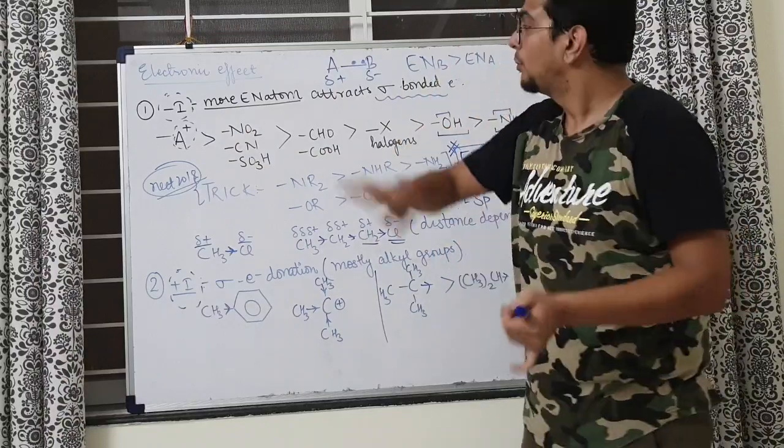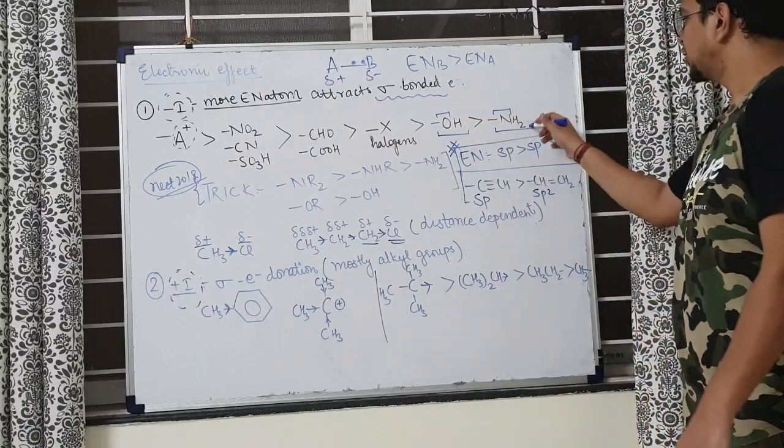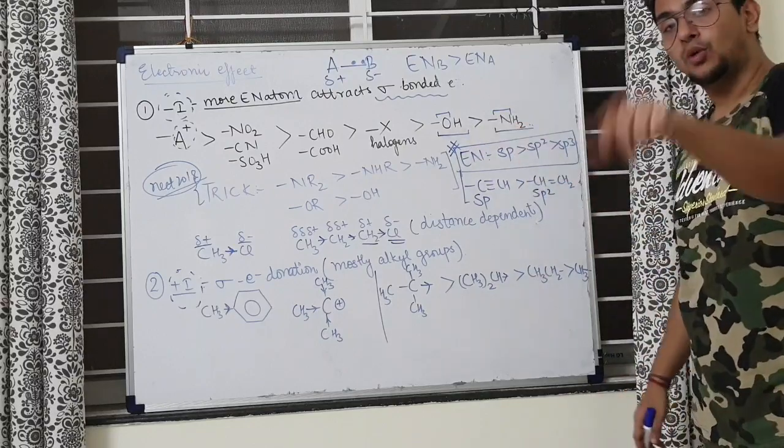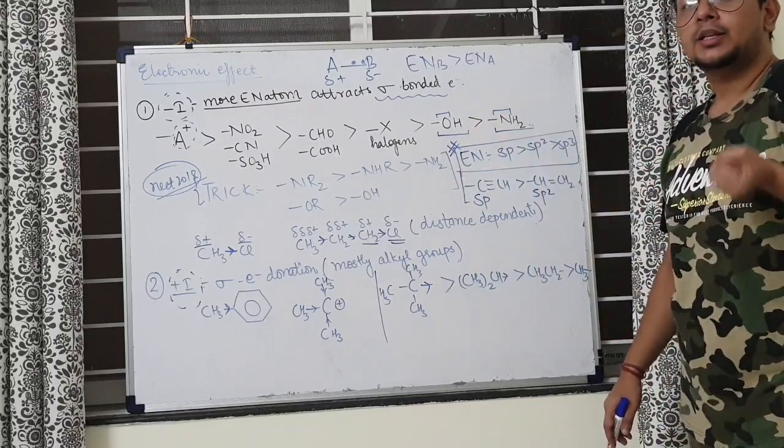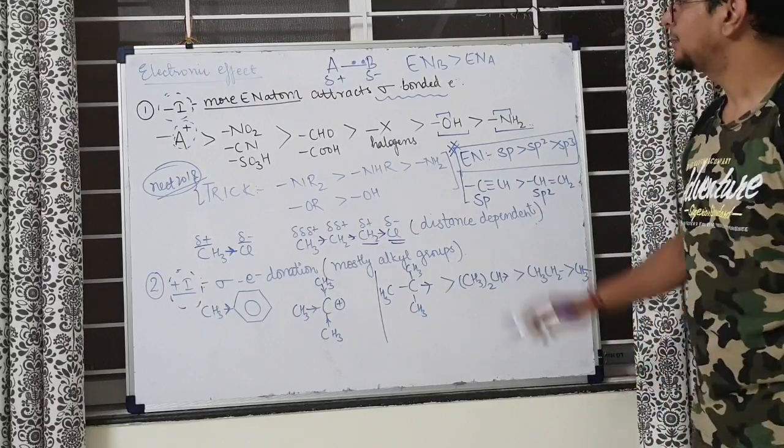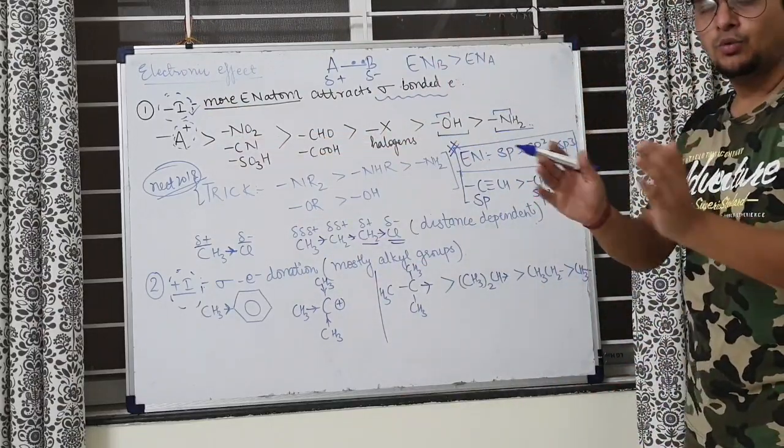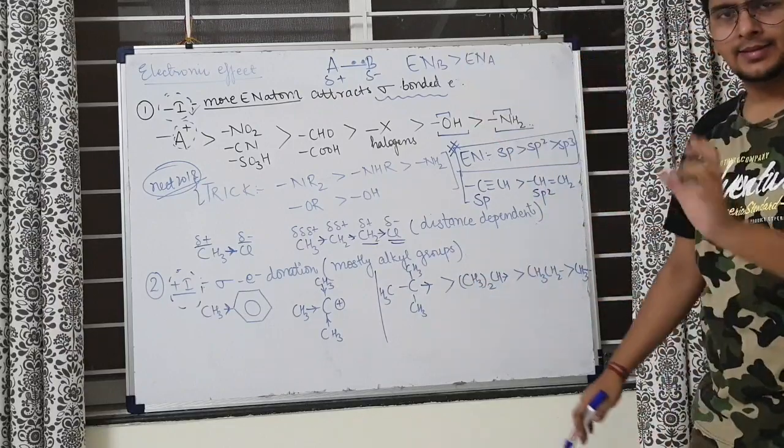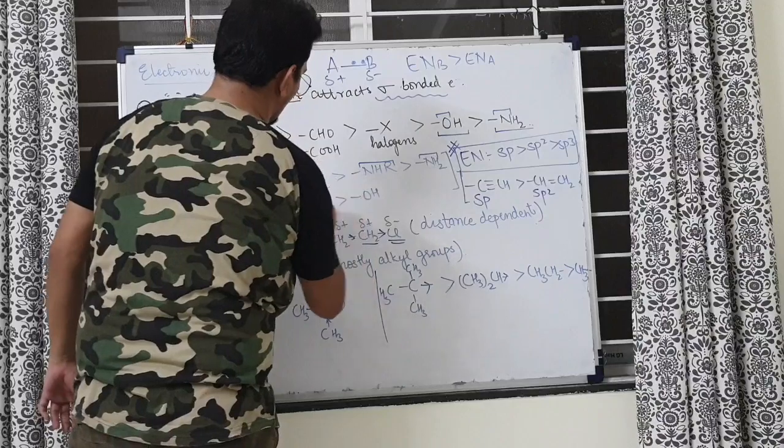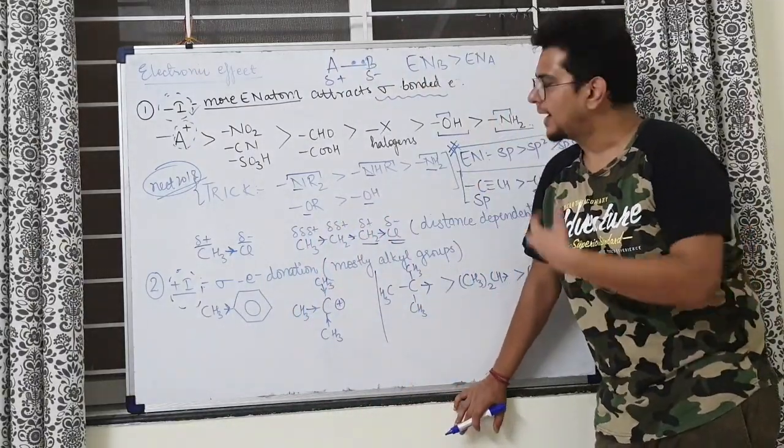After halogen, OH, then NH2. Why NH2 after OH? Simple - nitrogen is less electronegative, oxygen is more electronegative, so oxygen has more tendency to attract electrons. If you don't want to remember the whole order, at least remember this much. The next trick: if the atom is same and alkyl substituents increase, more alkyl groups mean more electronegativity and more -I effect.